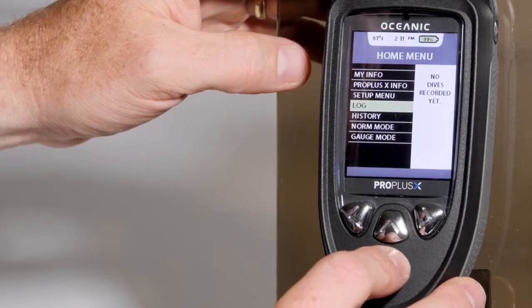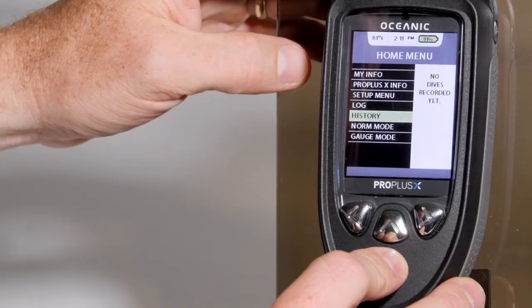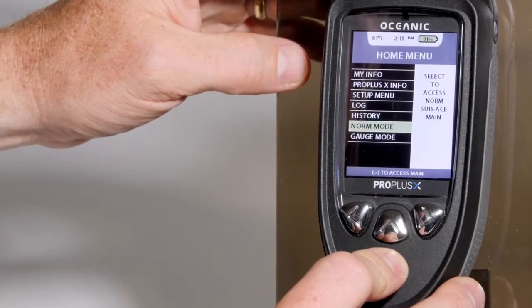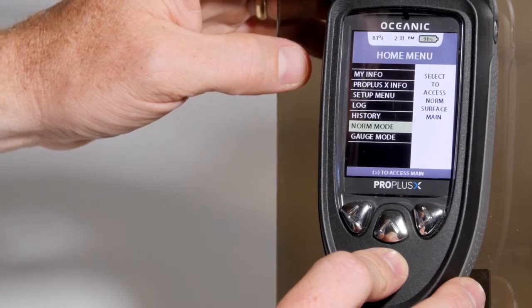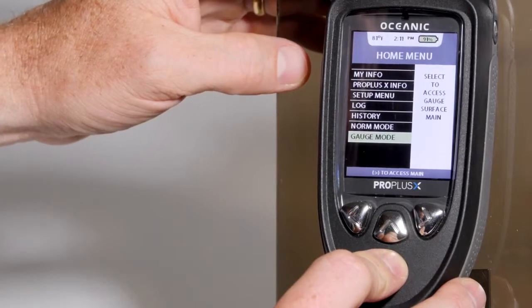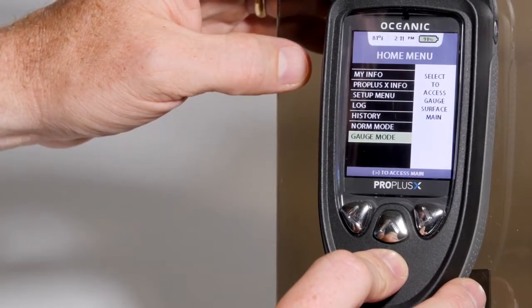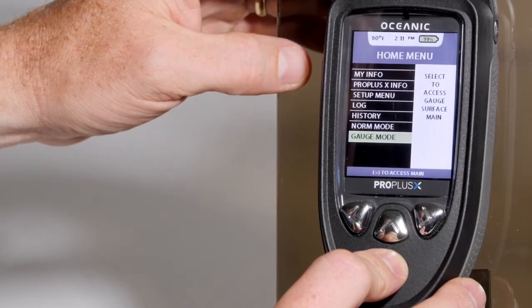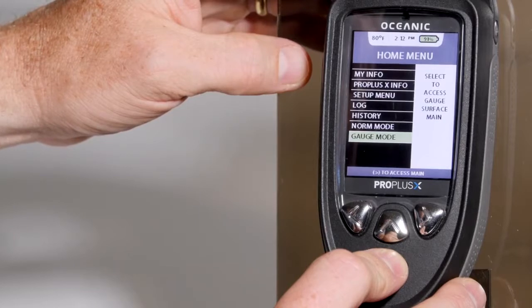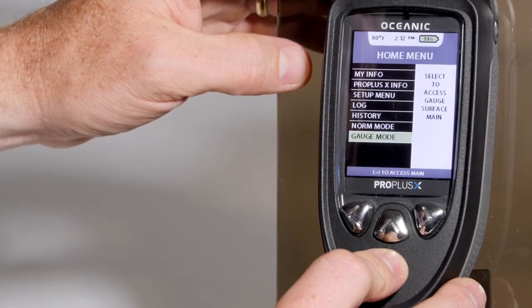You can enter the logbook. See the history of the computer. Enter norm mode or gauge mode. Note that entering gauge mode will turn the computer into a digital depth gauge. And after entering the dive and descending past a depth of 8 feet, the computer will no longer record oxygen or nitrogen loading for a period of 24 hours from the time you get out of the water last.